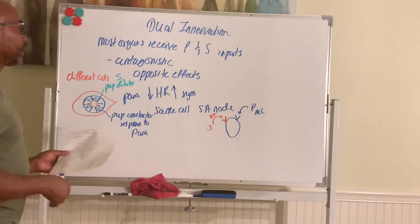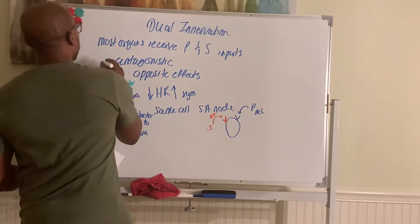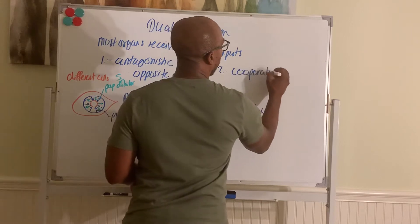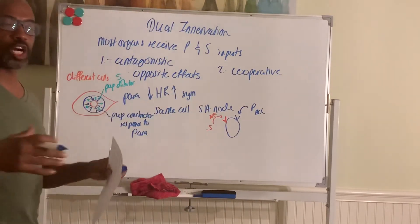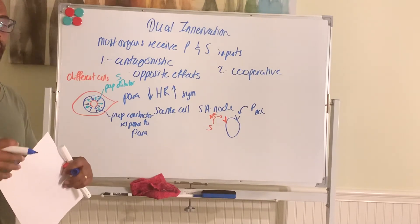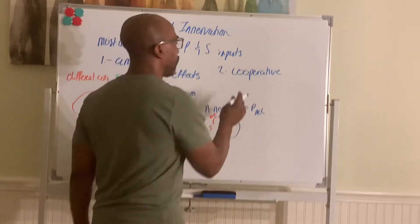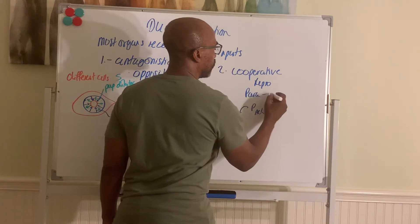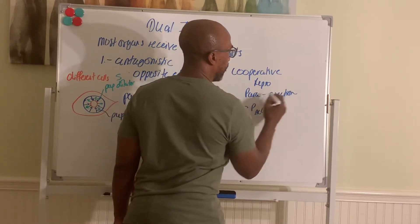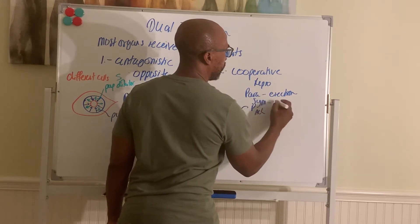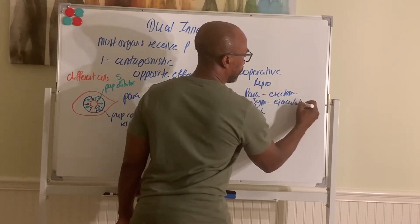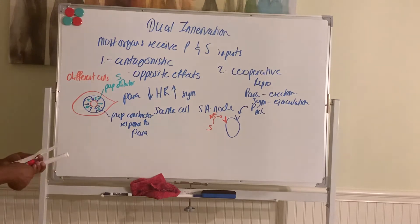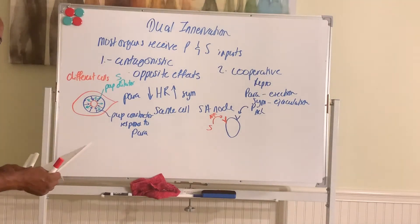Now, sometimes the effects may also be cooperative where both divisions act in concert to get a certain outcome at the end of the process. And then a good example here is in the reproductive system where the para division is used for erection, and the simpa division is used for ejaculation. They're cooperative. Without one, you can't have the other. So this is dual innervation.